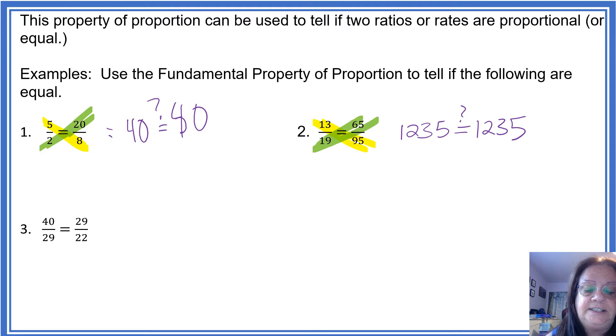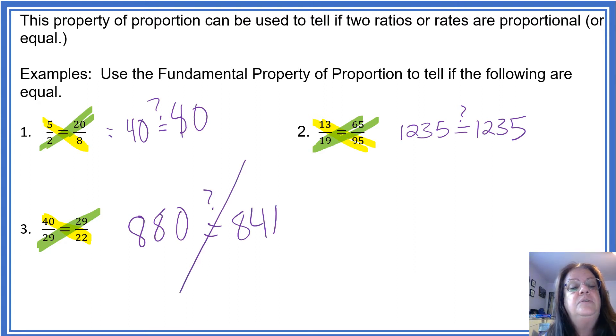All righty, again, 40 times 22, and 29 times 29. So 40 times 22 should be 880, and 29 squared is 841. No. So those are not equal proportions. Those are not proportional.